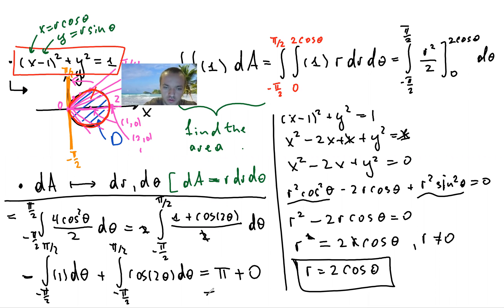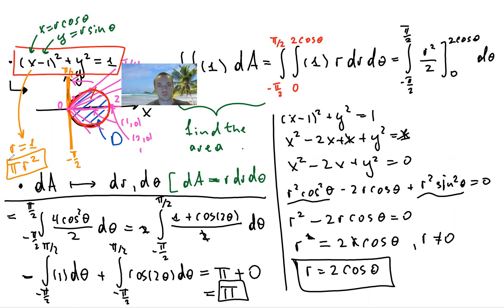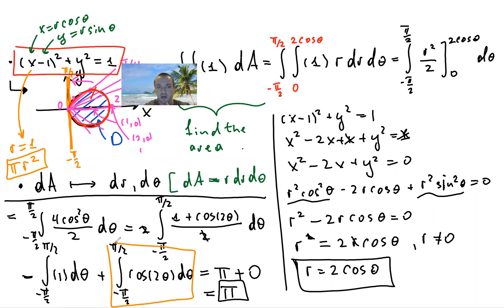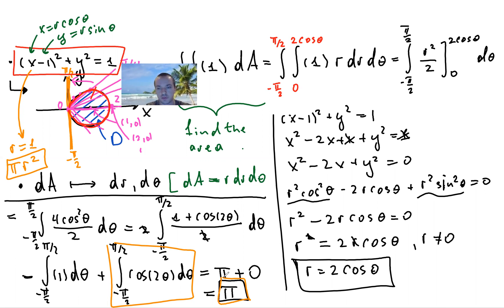The final answer is π. This makes sense because we have a circle of radius 1, and the area formula πr² gives π·1² = π. The second integral is zero because integrating cos2θ gives sin2θ, and sin(π) - sin(-π) = 0. So the area enclosed by the circle of radius 1 centered at (1, 0) equals π. Thanks for watching — let me know if you have any questions, and please subscribe!